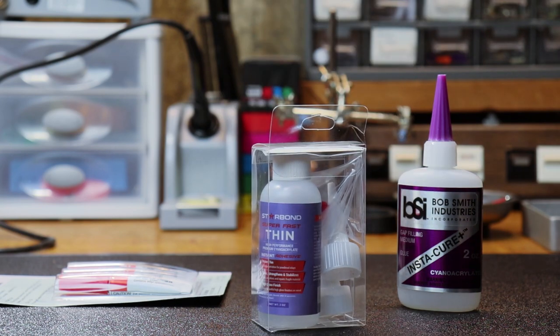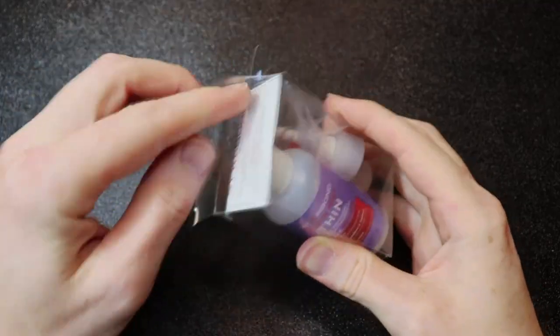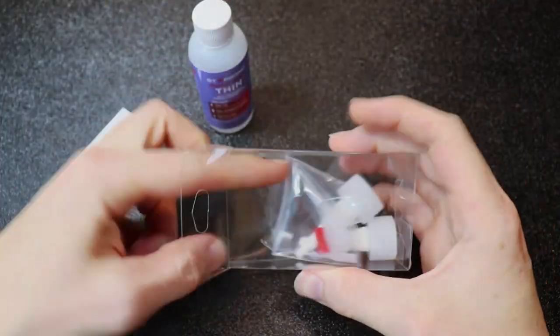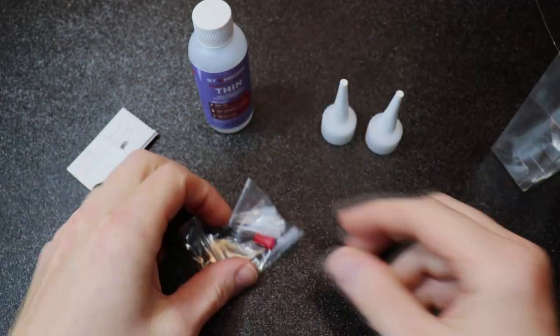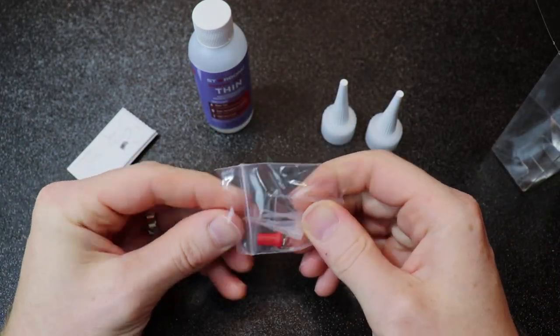I picked up this kit off of Amazon and it comes with the bottle of glue, some nozzle tops, and these handy little super thin straws that are going to help us get the glue right down in the crack and not anywhere else.